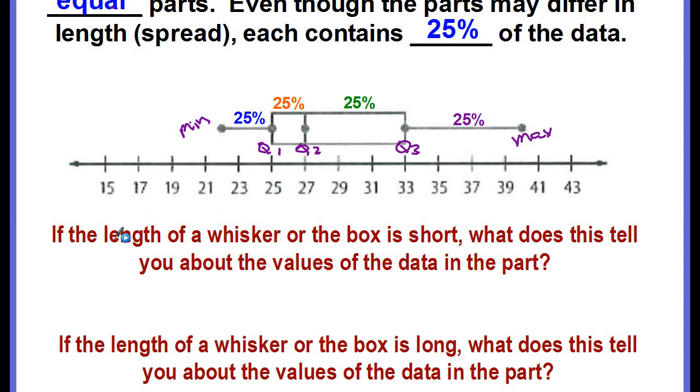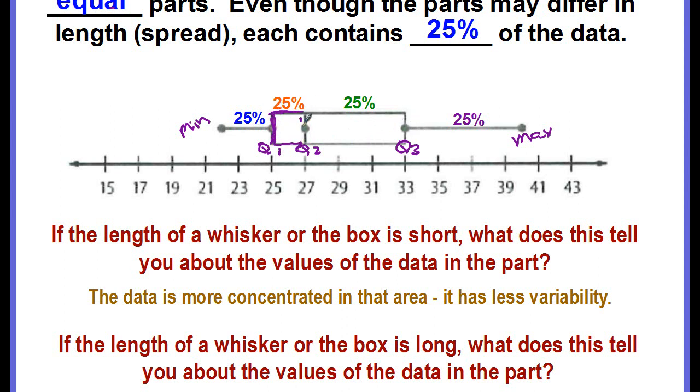If the length of a whisker or the box is short, what does this tell you about the values of the data in that part? It means the data is more concentrated in that area, it has less variability. Look right here from Q1 to Q2, it's a very small box, it's not spread out, it's shorter, so that means there's not a lot of variability.